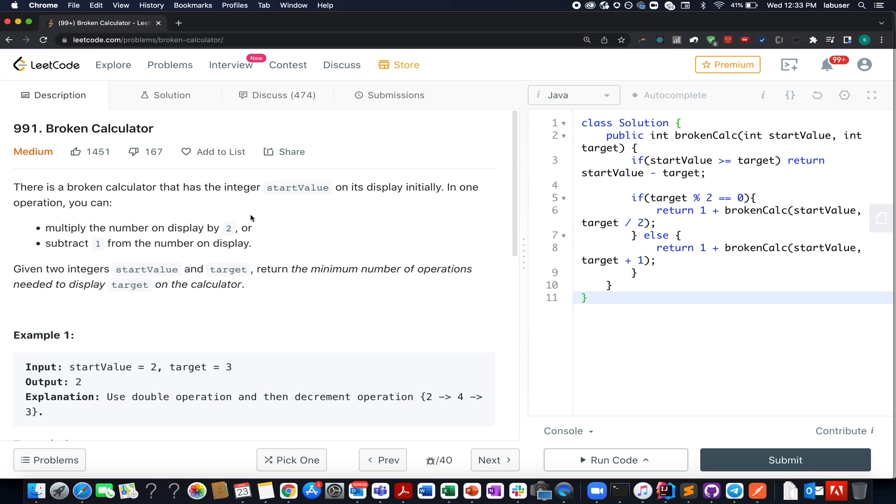Now let's get back to the question which is Broken Calculator. Here in this question we are given two integers, one the start value, other the target value. We need to reach from the start value to the target value. We can perform certain operations on the numbers - either multiply the number by 2 or subtract 1 from it. We need to identify the minimum number of operations needed to reach the target value.